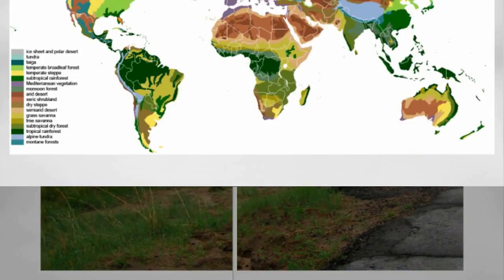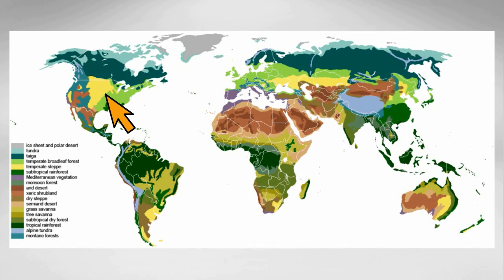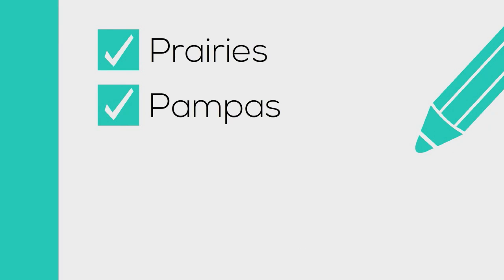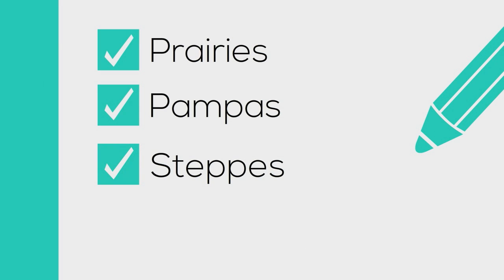Temperate grasslands is a biome found in North America, South America, Europe, and Africa. In North America they are called prairies, in South America they are called pampas, in Europe they are called steppes, and in Africa they are called velds.